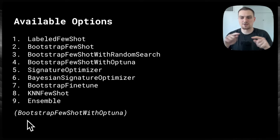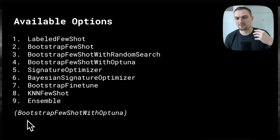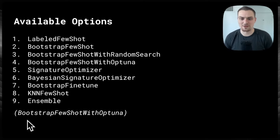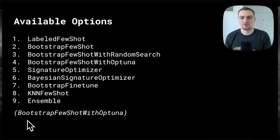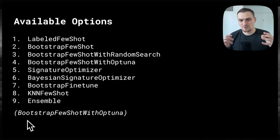Bootstrap FewShot is searching through for those few-shot examples. Say you have 30 questions in your dataset and you want four examples in the prompt of each of your programs — what are the optimal four to include? This is when we introduce discrete optimizers typically used in hyperparameter optimization. A lot of the stuff from Weights & Biases is going to translate fantastically to DSPy, where we already have experiment tracking, visualization, and this kind of stuff in place.